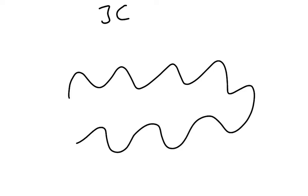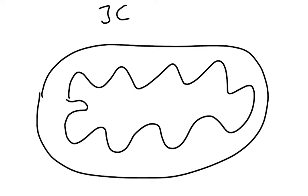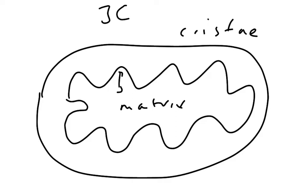Mitochondria have an inner membrane and an outer membrane with a hugely important gap between the two. The inside of the mitochondria is called the matrix, and this is the intermembrane space. These bits stick out to increase the surface area for oxidative phosphorylation, and they're called cristae — a wonderfully bizarre name.